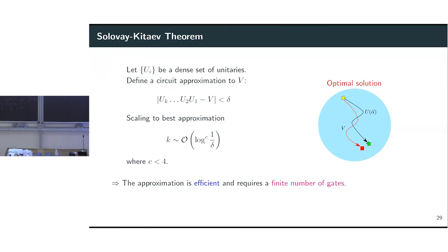The Solovay-Kitaev theorem tells us that to perform this optimization you can get a set of dense unitaries. If you define your circuit approximation V using K gates, the difference between the true solution and your approximation can be less than a chosen delta. The theorem states that the number of necessary gates to achieve this approximation is O(log^c(1/δ)) where c < 4. This means you can find a finite number of gates approximating your solution in Hilbert space — there is a future for this approach.